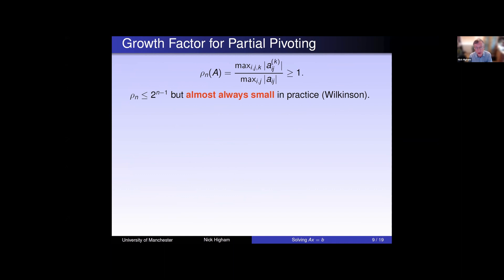Wilkinson, in his pioneering backward error analysis, recognized the importance of the growth factor in understanding the stability of LU factorization with pivoting. He showed that with partial pivoting, the growth is at most 2 to the n minus 1, and that that's attainable. But he also realized that in practice, the growth factor is usually small, say of order 10. This is something that has been borne out by experience over the whole period of digital computing.